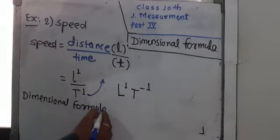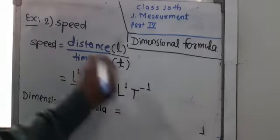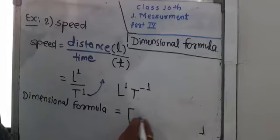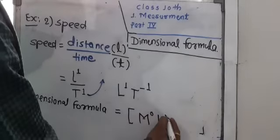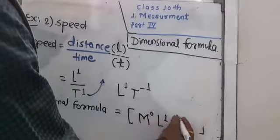The dimensional formula for speed is represented as M raised to 0, L raised to 1, and T raised to minus 1.